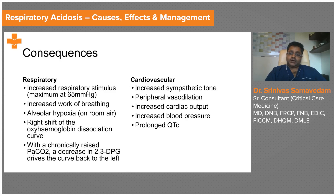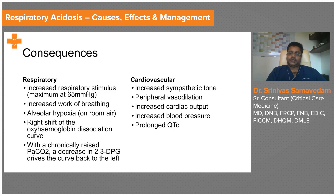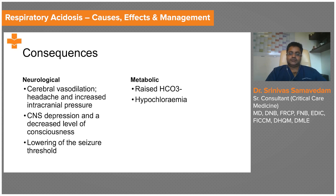At the cardiovascular level, an increase in circulating carbon dioxide will increase sympathetic tone and cause peripheral vasodilation, similar to metabolic acidosis. Blood pressure increases, and there can be a prolongation of the QT interval due to elevated carbon dioxide.